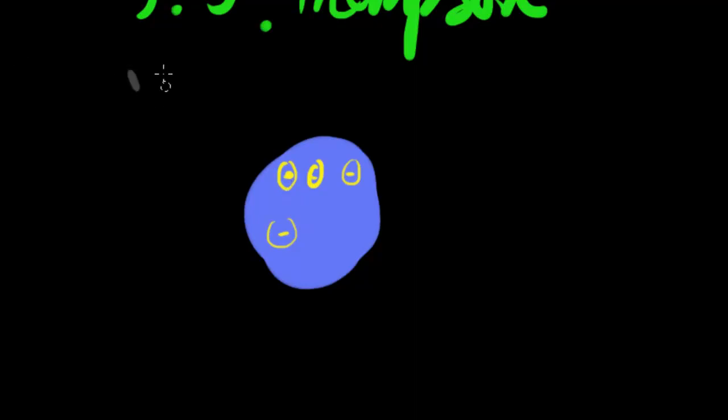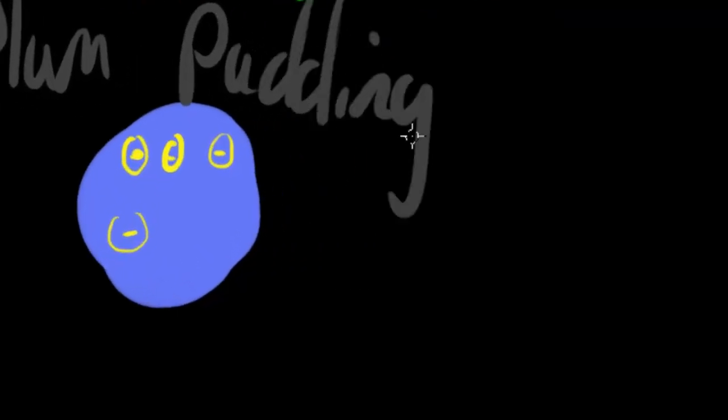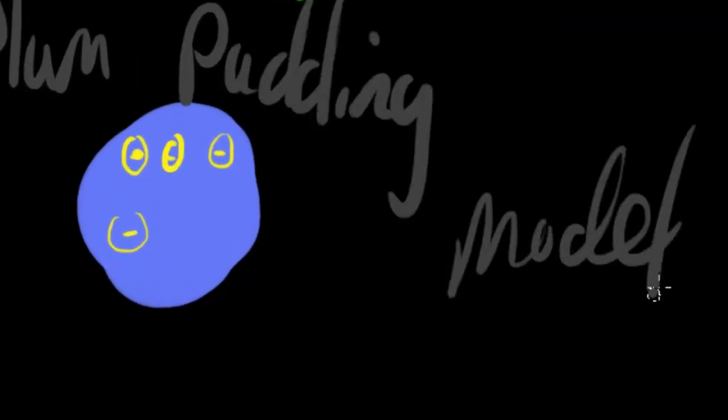This model was known as the plum pudding model of the atom, because it's sort of like a plum pudding — you've got the whole cakey stuff and then you've got the plums, which are the electrons. J.J. Thomson actually called electrons 'corpuscles'; we now know them as electrons.